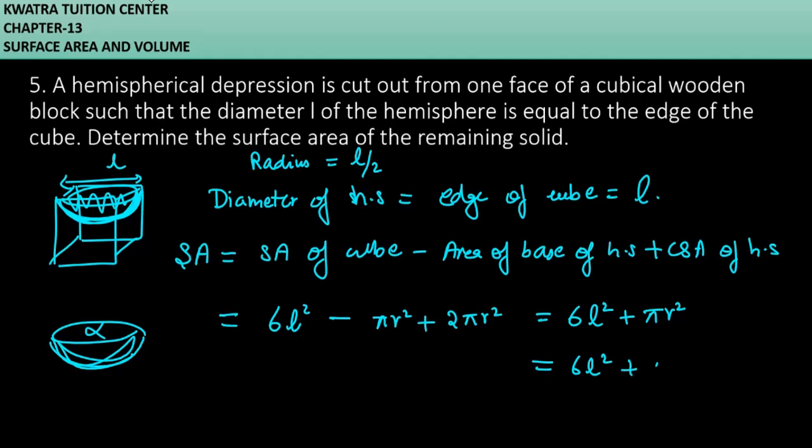So it is π(L/2) whole square. So you will get the value as 6L² plus πL² over 4. Now what you can do is take the LCM. And LCM, how much will you have? 24L² plus πL² divided by 4. So yes, this is the answer.